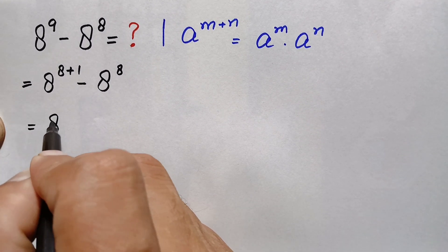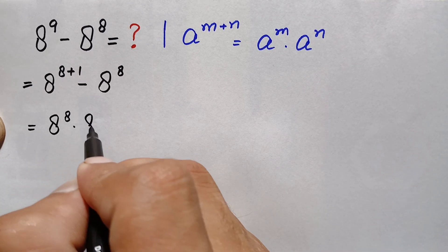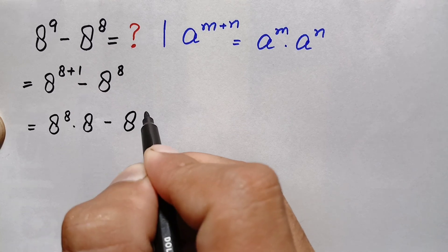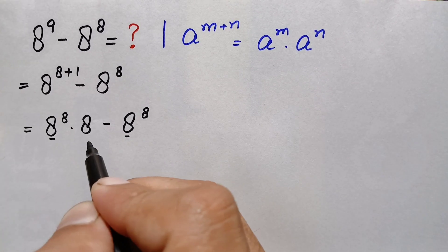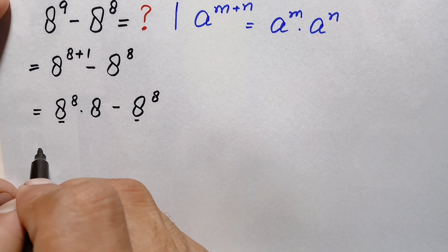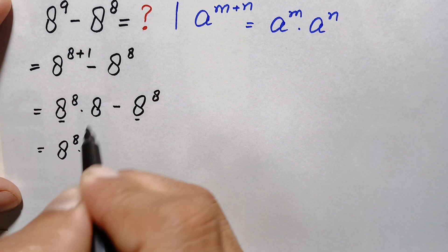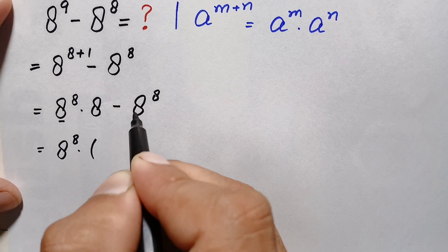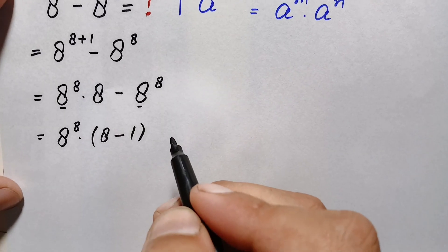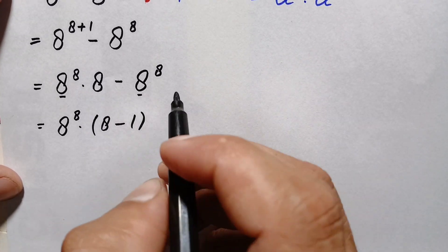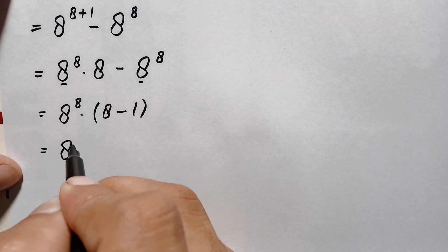Using that identity, the first term becomes 8 raised to power 8 times 8 raised to power 1, which is simply 8, minus 8 raised to power 8. Now 8 raised to power 8 is common in both terms, so we take it out as a common factor. This leaves 8 minus 1, and 8 minus 1 is simply 7.